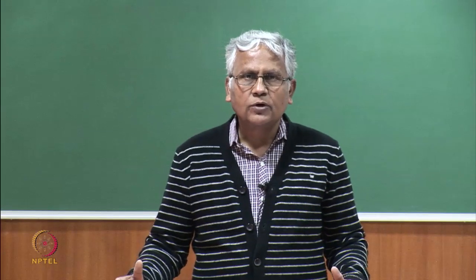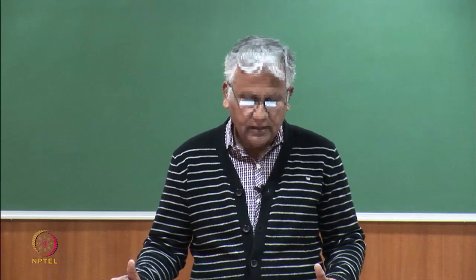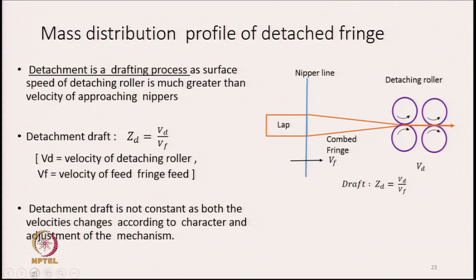Detachment is a draft-spring process as the surface speed of the detaching rollers is much greater than the velocity of the approaching nippers. The nippers are holding the fringe and it is moving forward toward the detaching roller nip. The velocity of the fringe movement is Vf and the detaching roller moves forward at velocity Vd. Therefore, the detachment draft Zd can be written as the ratio of Vd to Vf.